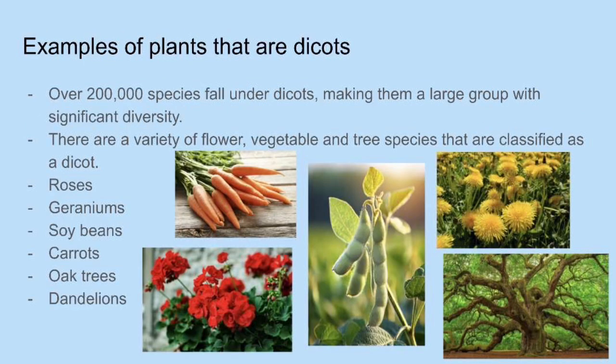Here are some examples of plants that are dicots. There are over 200,000 species that fall under dicots, which makes them a large group with significant diversity. There are a variety of flower, vegetable, and tree species that are classified as a dicot. Some examples include roses, geraniums, soybeans, carrots, oak trees, and dandelions.